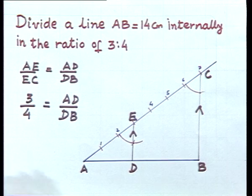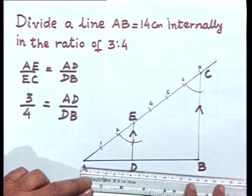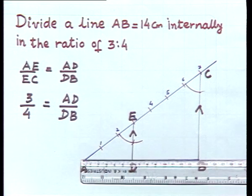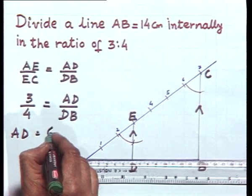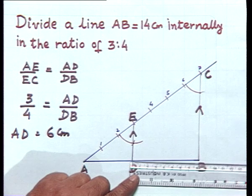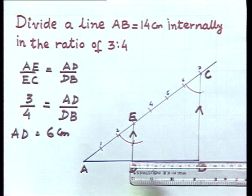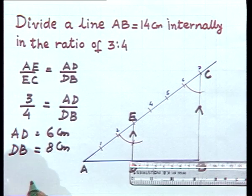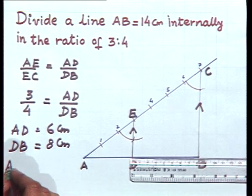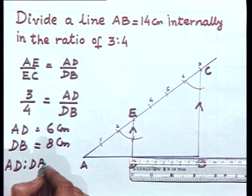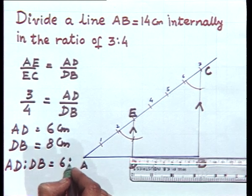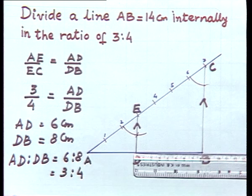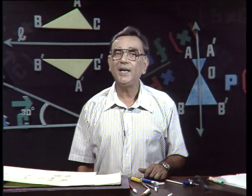Let us verify this by actually measuring the lengths AD and DB. The length AD by actual measurement is six centimeters and the length DB is eight centimeters. Taking the ratio AD to DB, that is equal to six is to eight, which on simplification gives us three is to four. So here is the concept where we divided the line internally in a given ratio. When the point divides the line internally, it always lies between the end points of the given line.